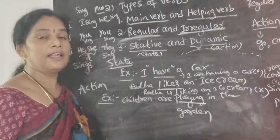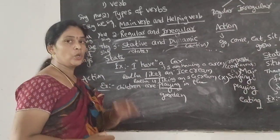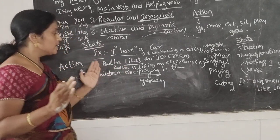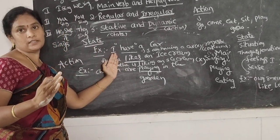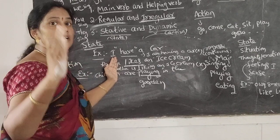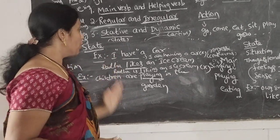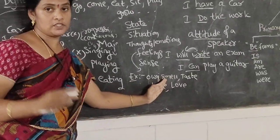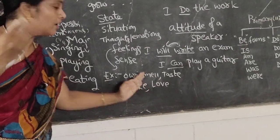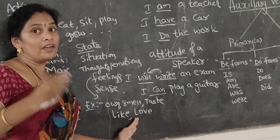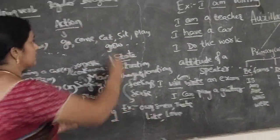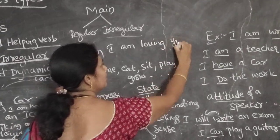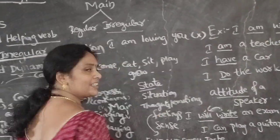There is no continuous form for state verbs. That means we cannot say: Radha is liking an ice cream; Sita is smelling a flower; I am loving you — we cannot say like this. Why? Because 'love' is a stative word. So here we have to write 'I love you' — not 'I am loving you'.